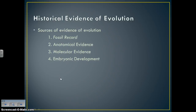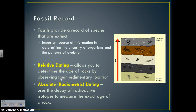If the theory of evolution is based on significant amounts of evidence and data, we need to discuss what those sources of evidence are. The first is the fossil record. We'll also talk about anatomical evidence, molecular evidence, and embryonic development. Fossils provide a great deal of information about species that are no longer on Earth and are important in determining the ancestry of organisms and the pattern of evolution.